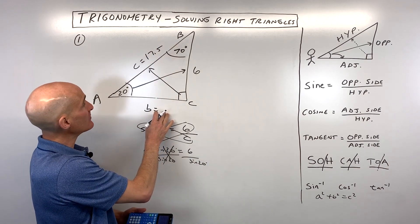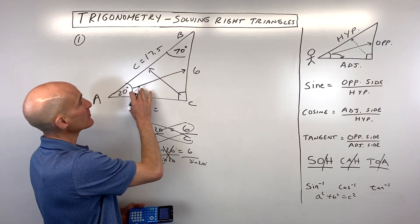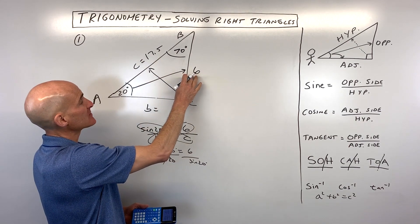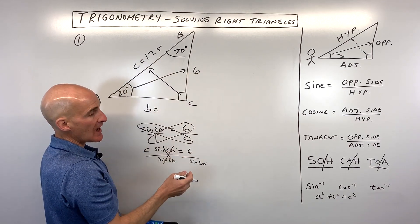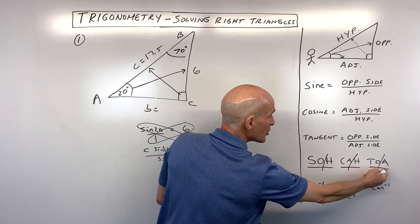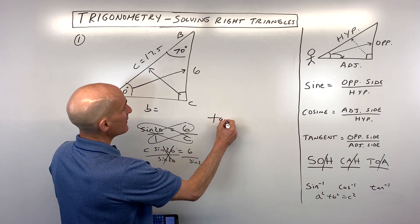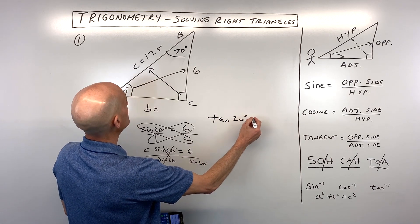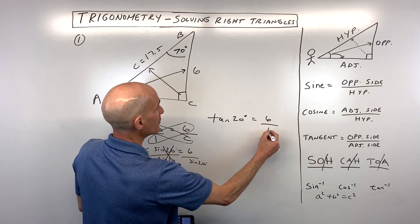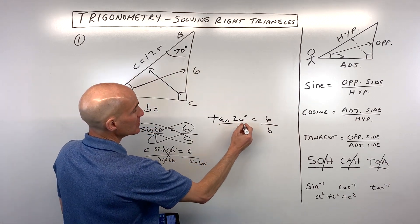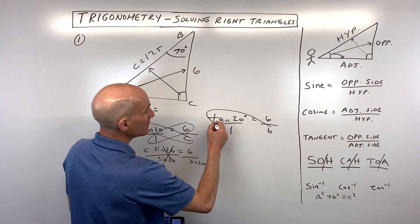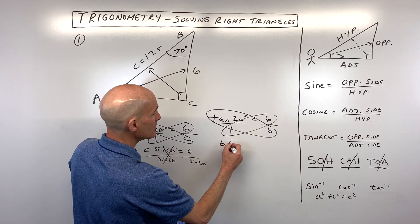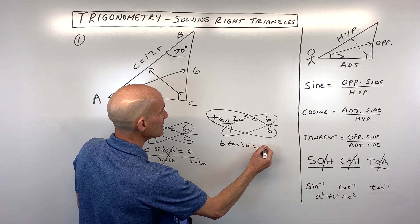Now if we want to solve for side B, I like to go back to the original numbers just because this is rounded here. So we've got opposite and adjacent. Which one's opposite and adjacent? That looks like TOA, that's tangent, the tangent ratio. So we have the tangent of 20 degrees equals 6 over side B. Then we can think of this as being divided by 1. We can do the cross multiplying to get rid of the fraction. So that's B times the tangent of 20 equals 6 times 1, which is 6.